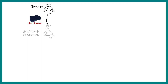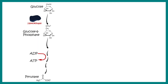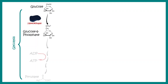Glucose gets converted to glucose-6-phosphate with the help of the enzyme hexokinase. This glucose-6-phosphate eventually forms pyruvate and ATP is generated — this process is glycolysis. When we have enough glucose after a meal, the body generates energy, but at some point there's too much glucose and the body doesn't need that much energy, so it stops glycolysis and diverts glucose-6-phosphate.